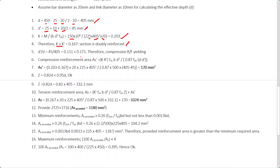Next, we check whether the compression reinforcement yields. We calculate D' over D using the values already determined: D' = 45mm and D = 405mm, giving a ratio of 0.111. This is less than 0.16, therefore the compression reinforcement yields and we can use the standard equations. If it did not yield, a different equation would be required.